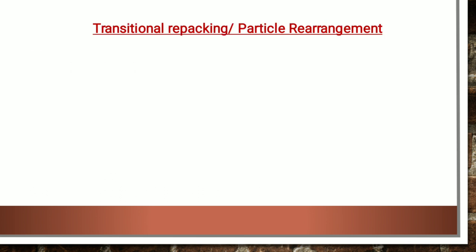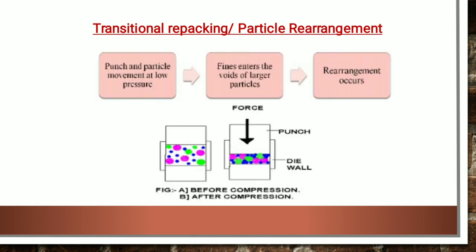Let us discuss now one by one. The first one, transitional repacking, also known as particle rearrangement. The particle size distribution and shape of the granules determine the initial packing, that is the bulk density. At low pressure, the granules flow with respect to each other, with finer particles entering the void between the larger particles, and the bulk density of the granulation is increased.